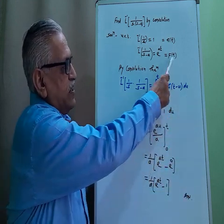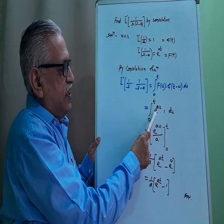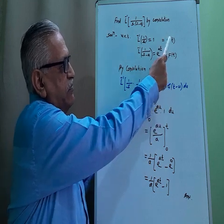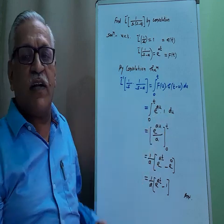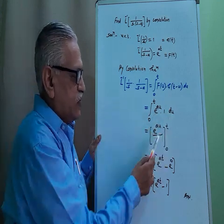That equals, replacing t by u here we get e raised to au, and replace t by t minus u we get 1. Therefore integration of e raised to au with respect to u.